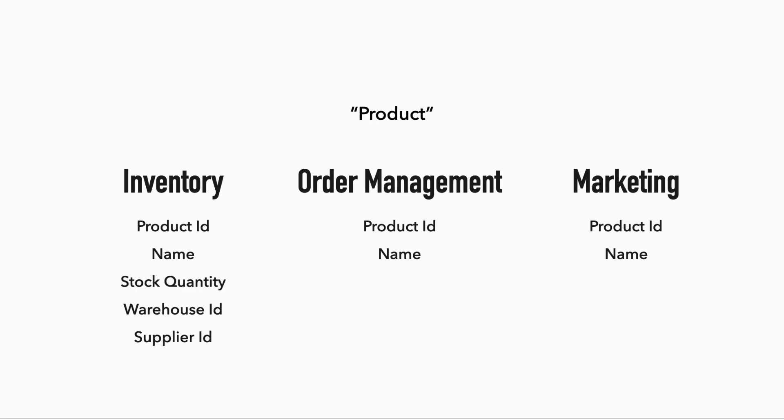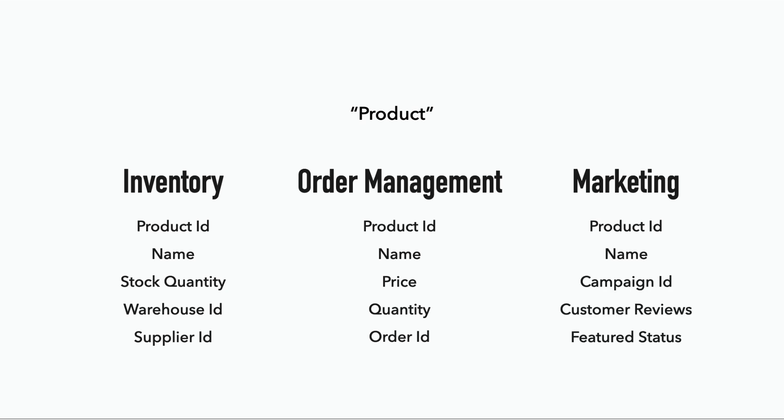In the inventory management domain, we might also need to know the quantity we have in stock, in which warehouse, and who the supplier is. In the order management domain, we need to know its price, what order it was sold in, and in what quantity. And in the marketing domain, we need to know the marketing campaign it was in, whether it was a featured product, and what the customer reviews were.